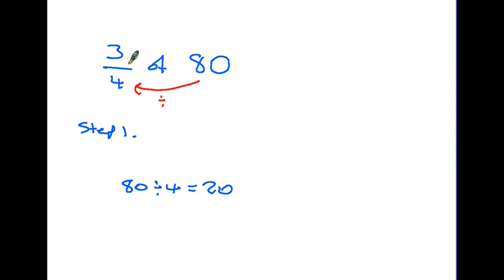Then we go back to the fraction and look at the top number. We're not being asked to find one quarter, we're being asked to find three quarters. Therefore we take our answer and we multiply it by the top number. 20 times 3 is 60. So three quarters of 80 is 60. Let's have a look again with another example.